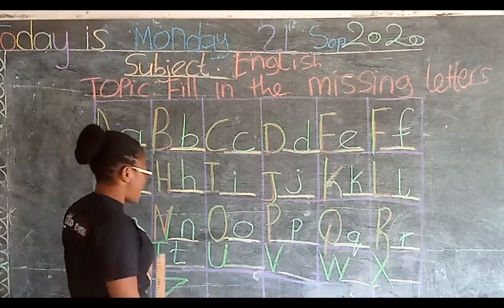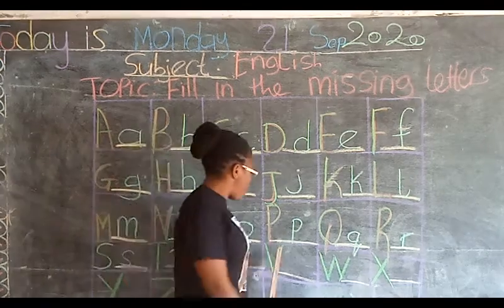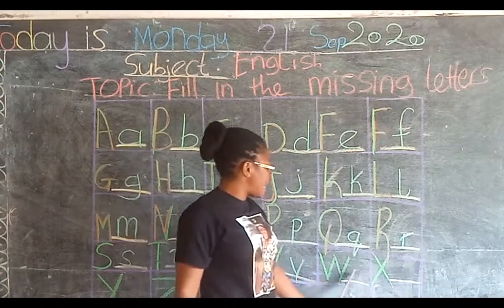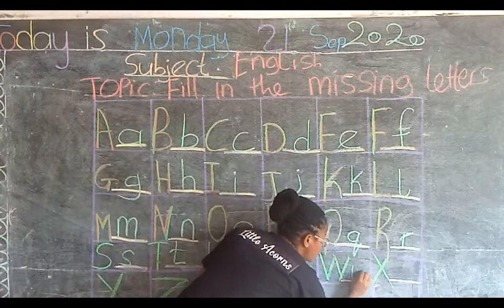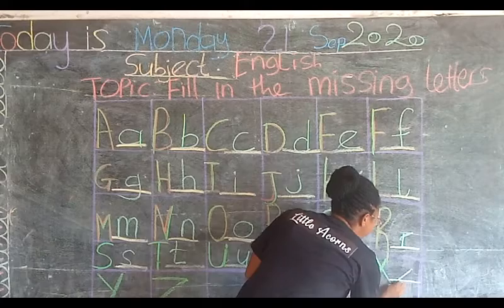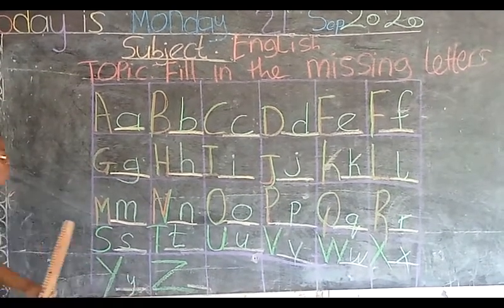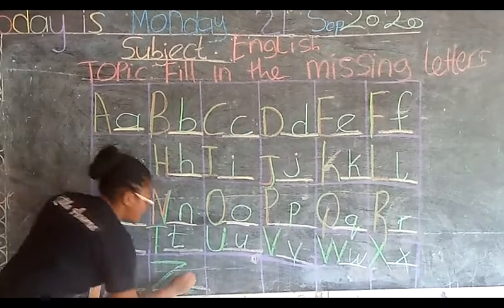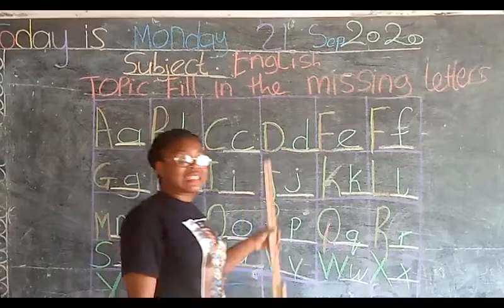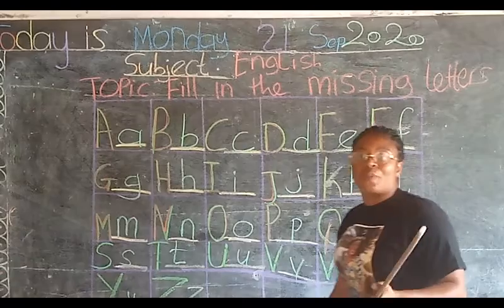Capital U, the lowercase is small u. Capital V, the lowercase is small v. Capital W, the lowercase is small w. Capital X, the lowercase is small x. Capital Y, the lowercase is small y. Capital Z, the lowercase is small z. So those are the 26 letters of the alphabet.